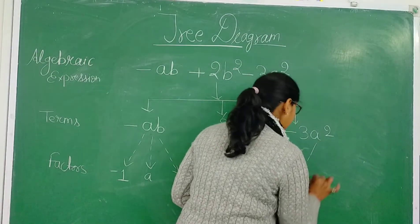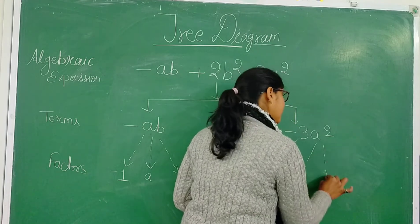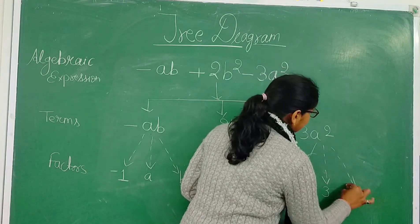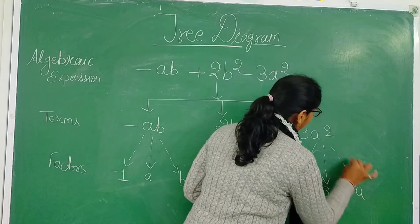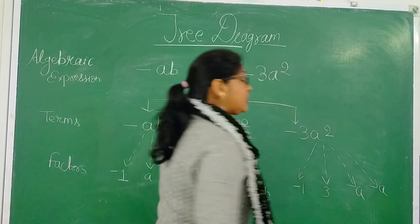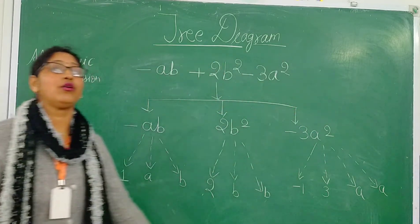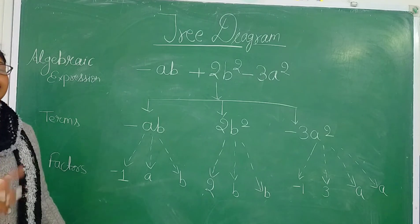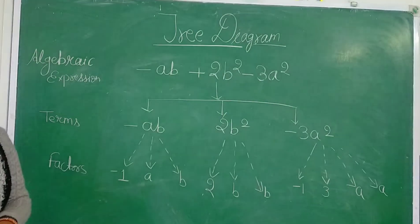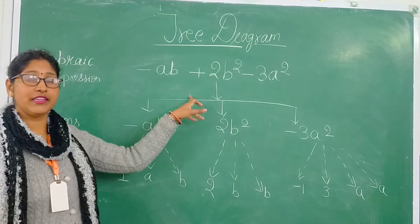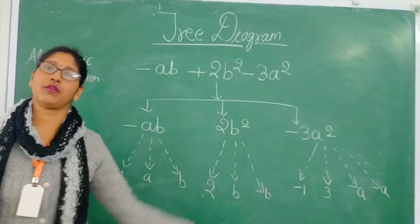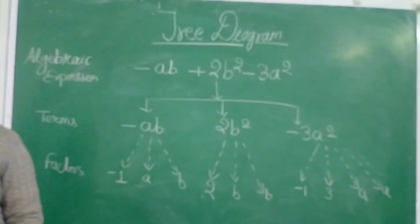The factors of minus 3a² are: first, minus 1; second, 3; third, a; and fourth, a. So this whole figure is said to be a tree diagram of the algebraic expression minus ab plus 2b² minus 3a². Thank you very much.